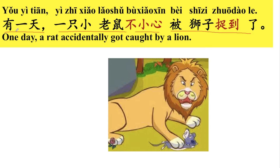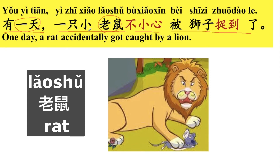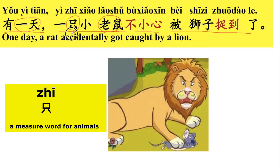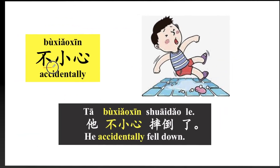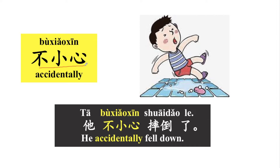有一天 — one day. 有一天 is a typical way to start a story. 一只小老鼠 — 只 is a measure word for animals, so 一只小老鼠 means 'a little rat.' 不小心 means accidentally; 小心 means careful. For example: 他不小心摔倒了 — He accidentally fell down. 摔倒 means to fall down.